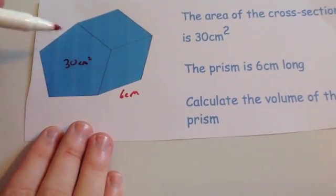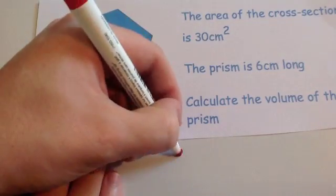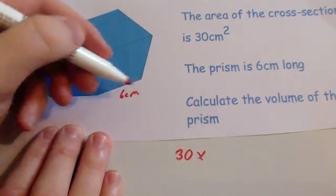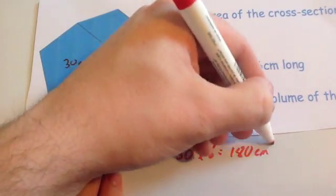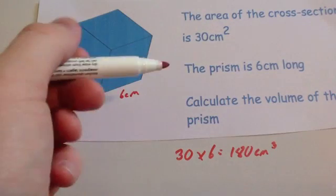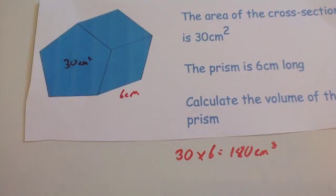The volume of the prism is the area of the cross section, 30 cm², times how long it is, which is 6 cm. That would be 180 cm³. Notice it's volumes in centimeters cubed, so the volume of the prism would be 180 cm³.